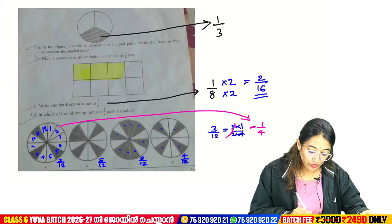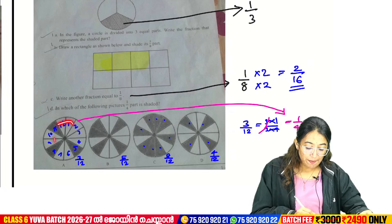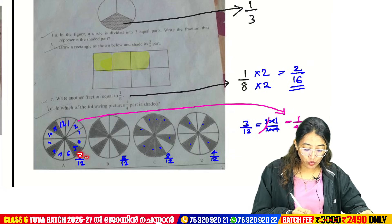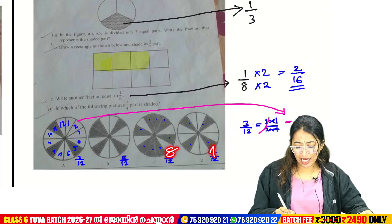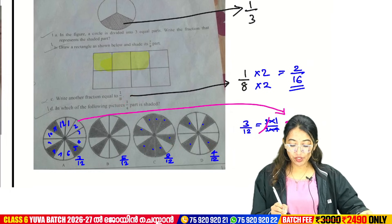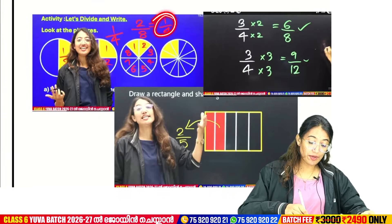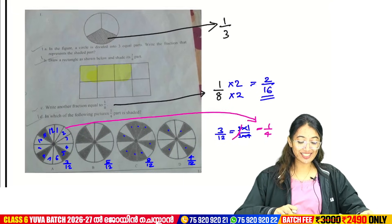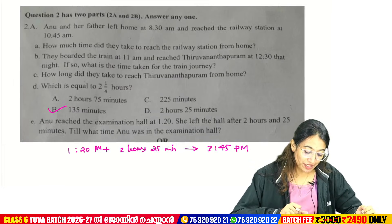Now, in which of the following pictures is 1 by 4 shaded? In the circle, you have to mark where we are shaded. Here is 3 by 12, here is 5, here is 8, here is 4. That's why 1 by 4 is shaded. If you have any questions about the first activity, then go to the second question.